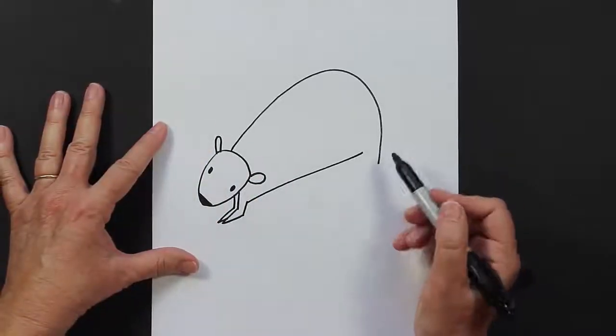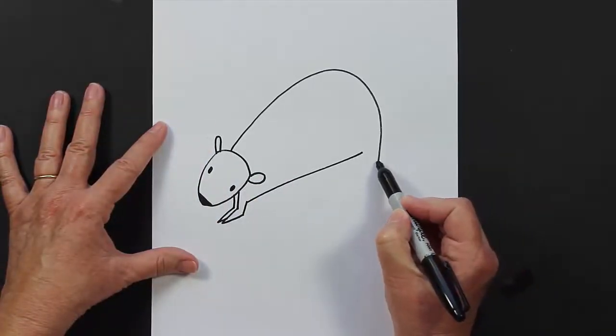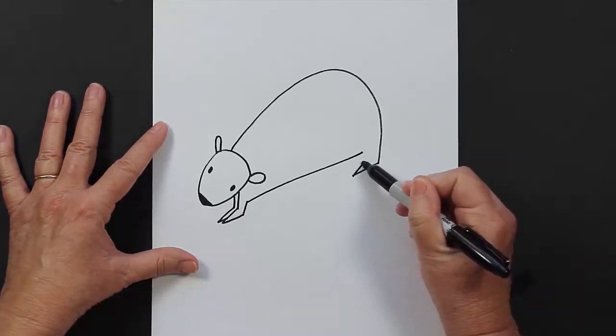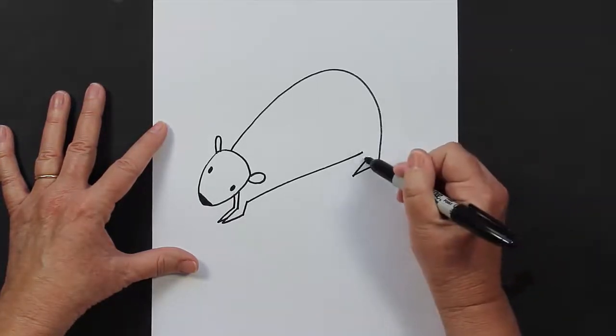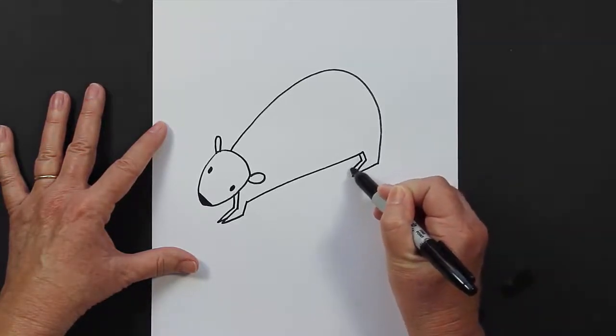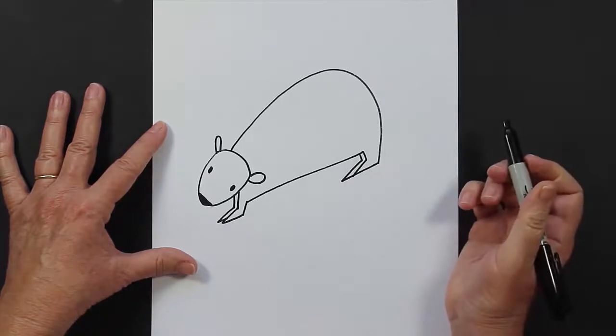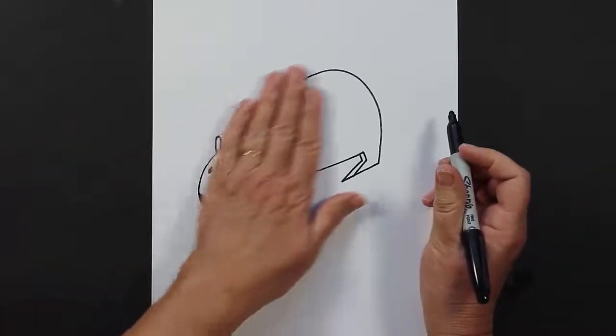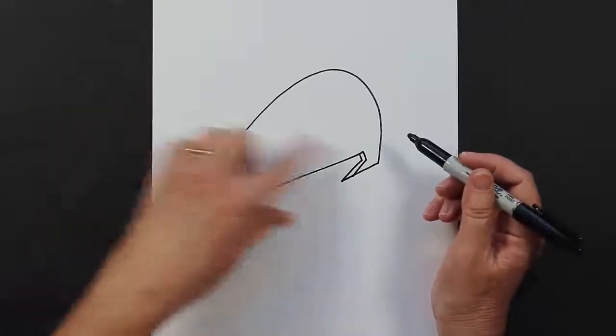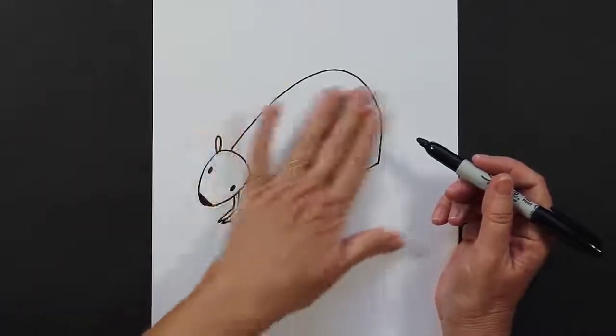So let's work on his back feet now. We're going to make a straight line and then it's going to turn into a V and then come up. And that same shape we're going to make again for his back foot. Now can you see how his body is shaped?